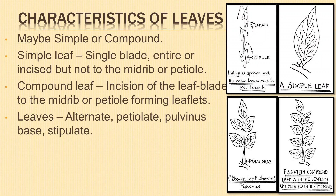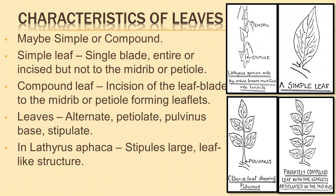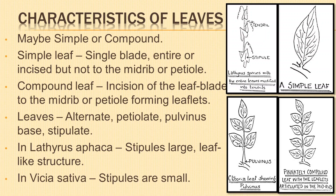Stipules are lateral appendages of the leaf born at its base. They are of various size and shape. In Lathyrus aphaca, the stipules are large leaf-like structures; being green due to chlorophyll, they perform carbon assimilation. In Vicia sativa, the stipules are small.